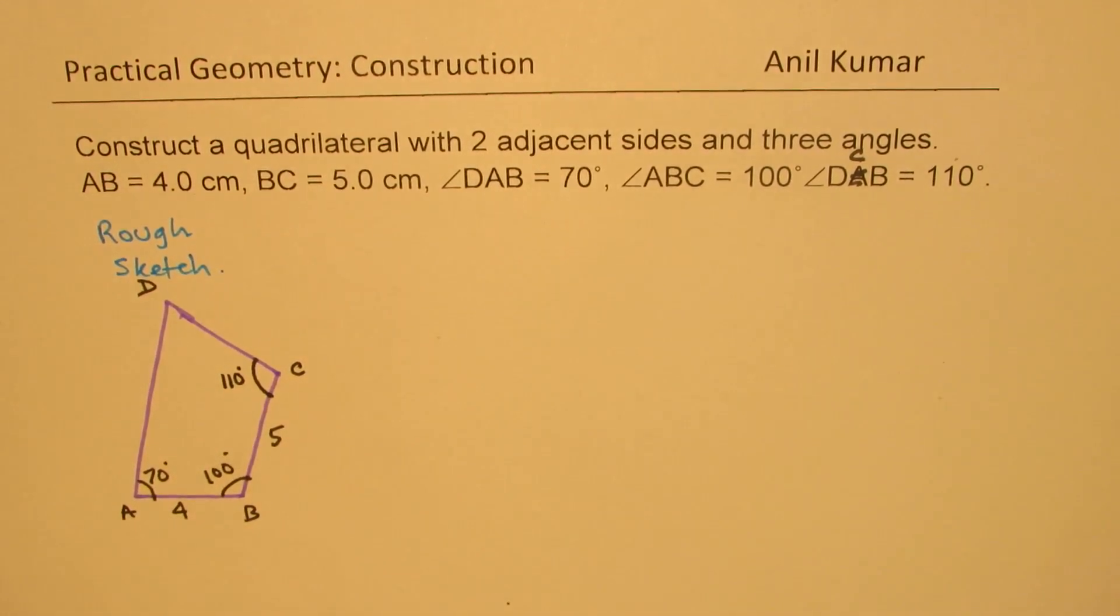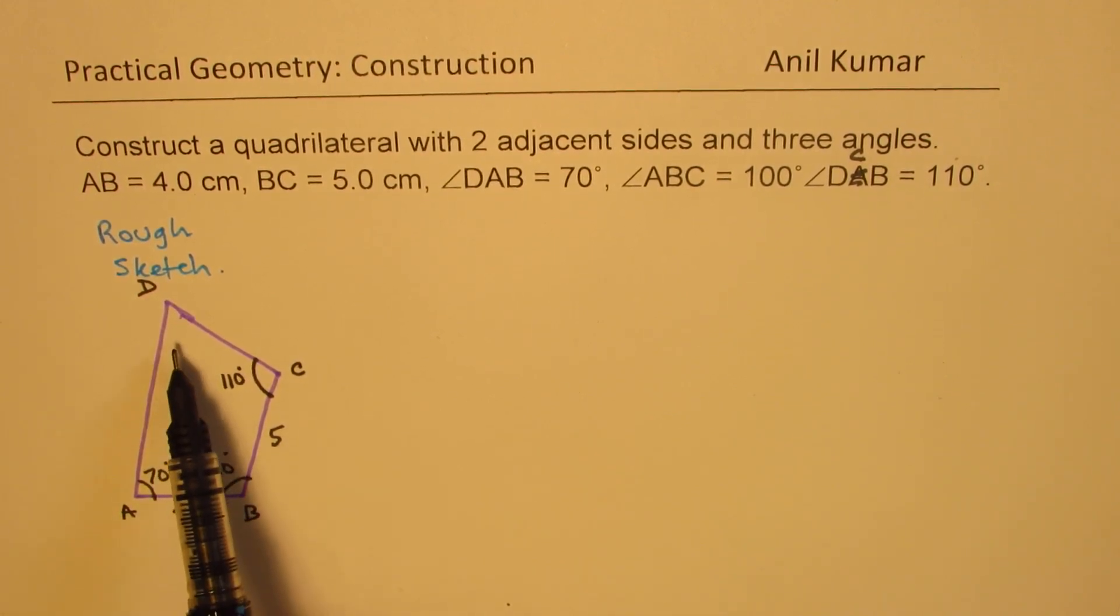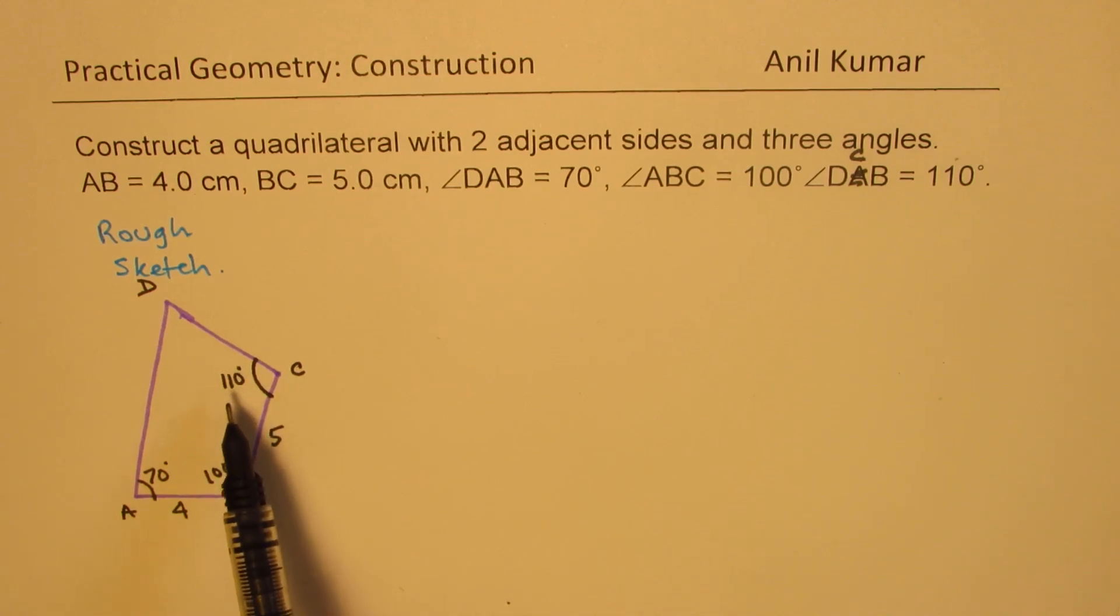So three angles are given to us and two sides. The fourth angle you can always find, and you should check that their total should be less than 360. So we can definitely make a quadrilateral with these dimensions. In this case, from A, we can begin with this line AB. We get these two angles and then we can easily sketch. So let's begin with AB.